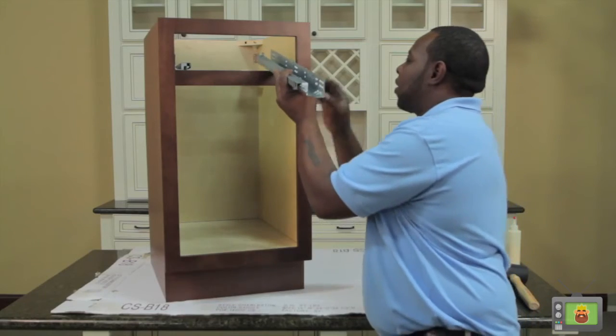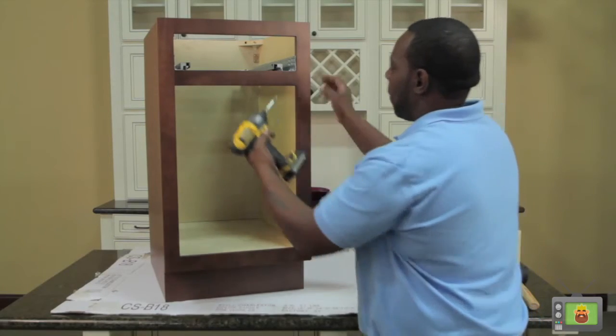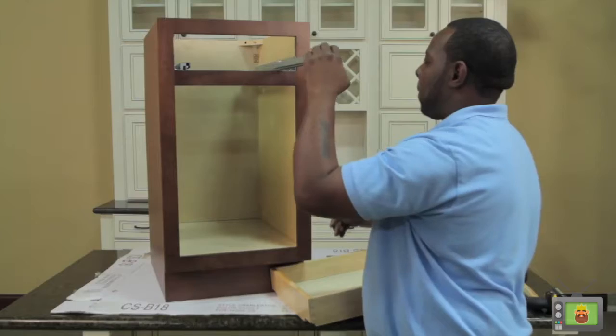Installing the glides is the next step. Take the glides and place them through the drawer box and slide them into the back support. Flush the glide up with the front of the face frame and use one of the silver flush mount screws to fasten the glide to the side.